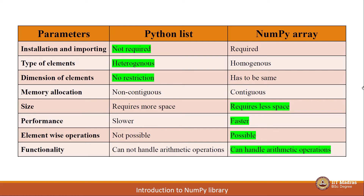First, installation and importing. As we know, Python list is the core data structure in Python language itself, hence we do not require any installation or import statement. Whereas NumPy is an external library, so we have to install this library and then only we can import it and use it, just like what we did with pandas.